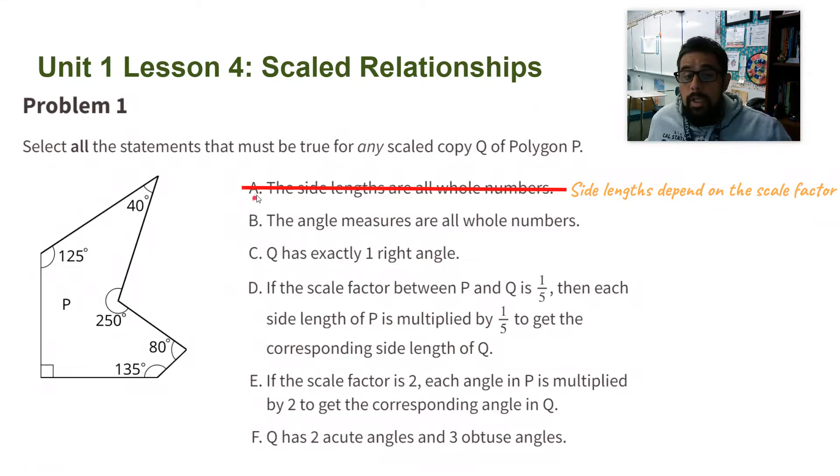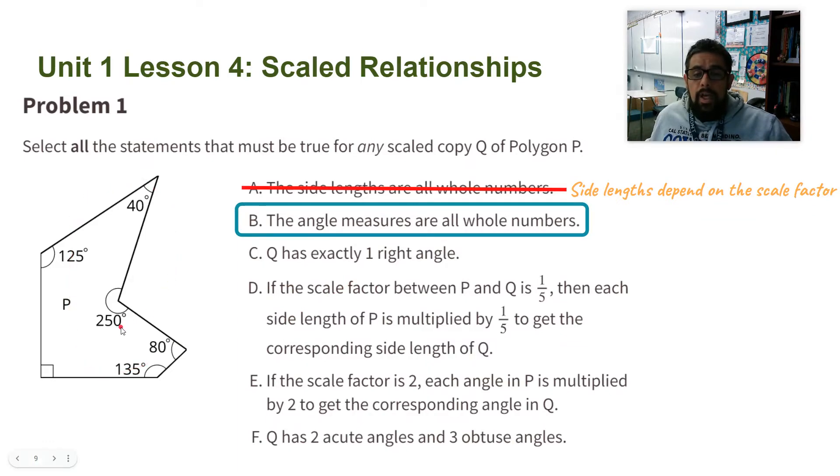Part B: The angle measures are all whole numbers. If we look at polygon P, all the angles are whole numbers, so any scaled copy will have the same angle measurements. This one is true because the original has whole numbers. Remember, corresponding angles of scaled copies stay the same.